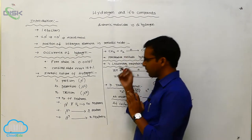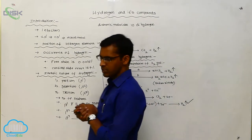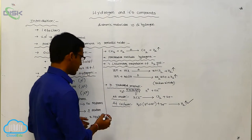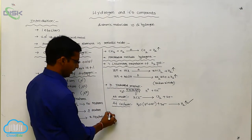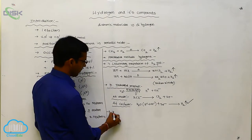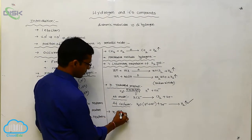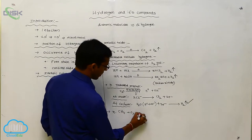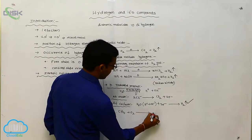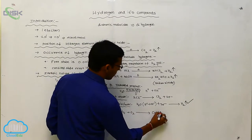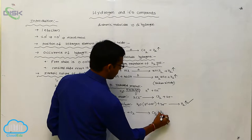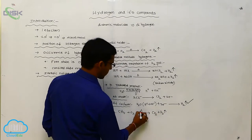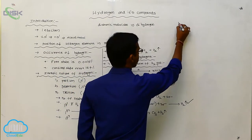Another preparation method is from hydrocarbons — from organic materials. Methane gas is used as a source, and this is the third method.